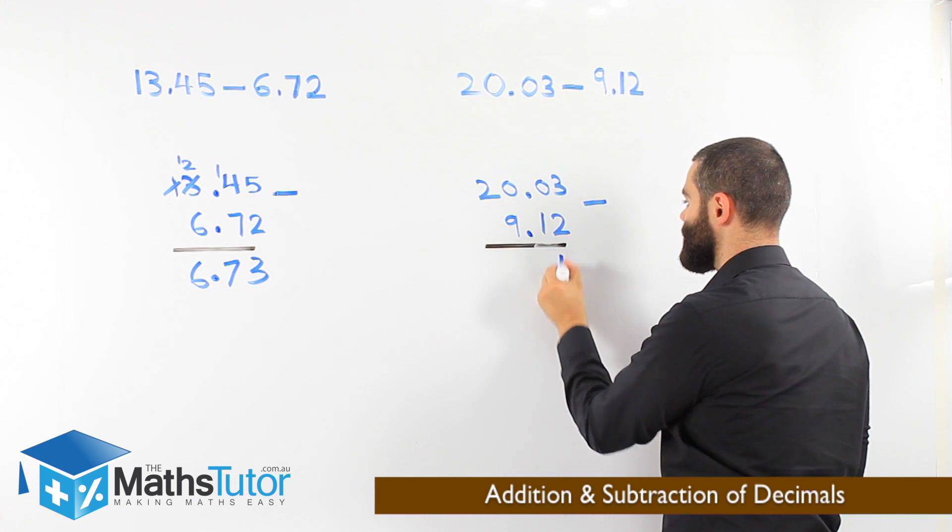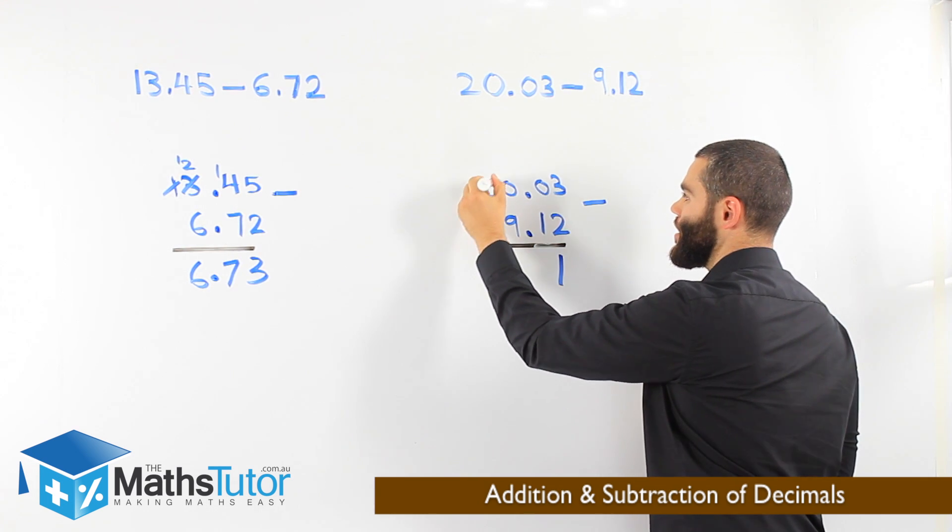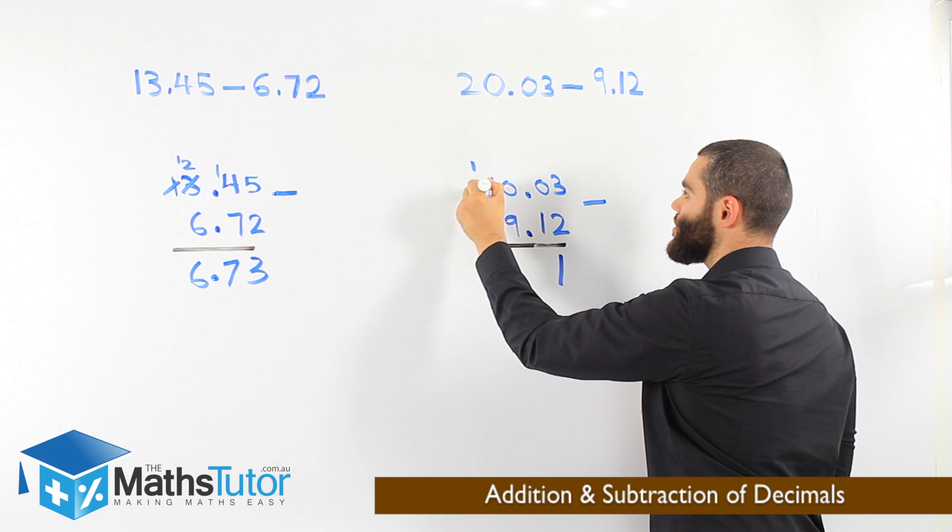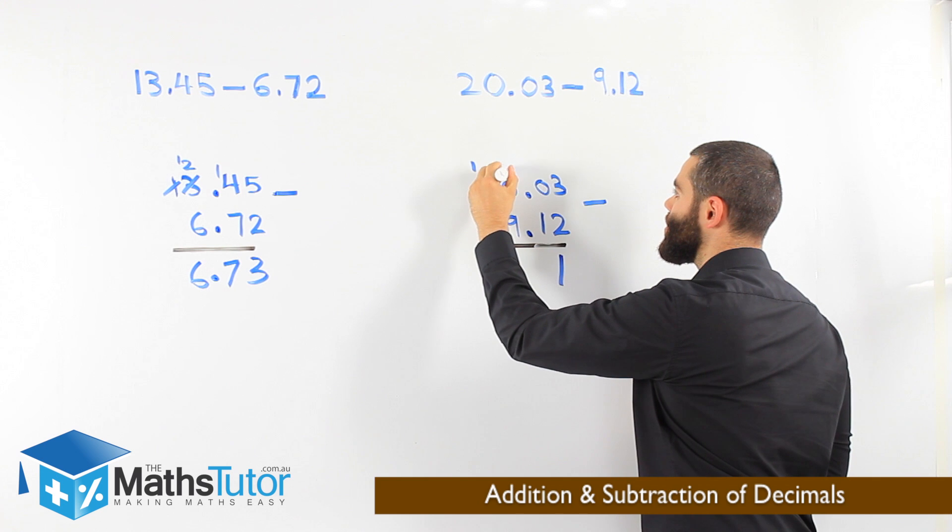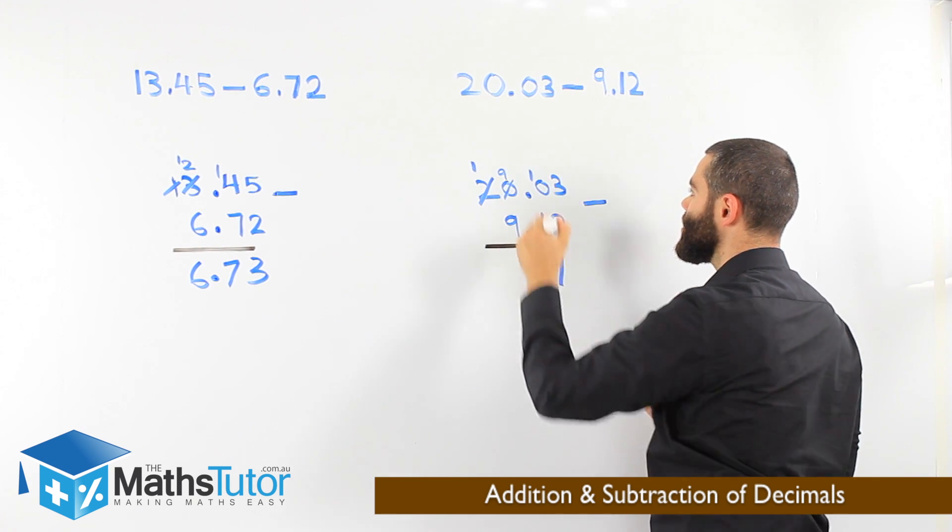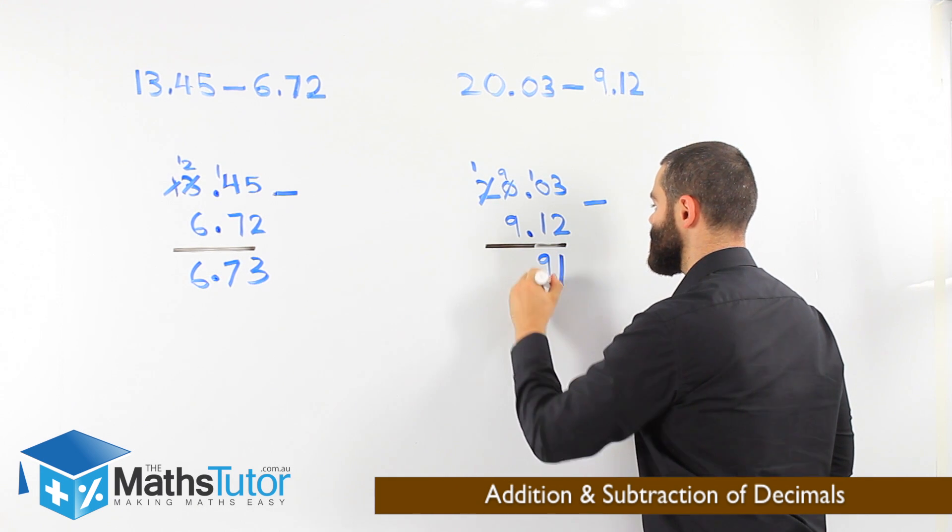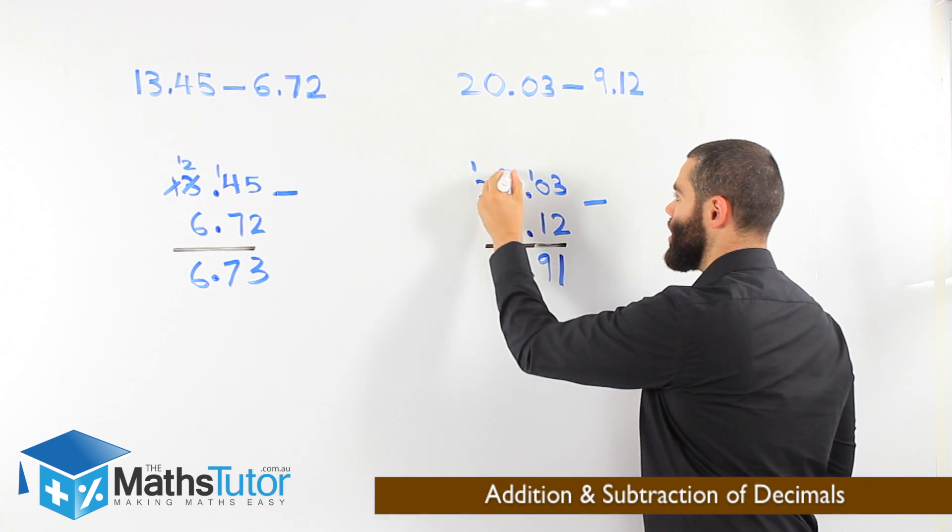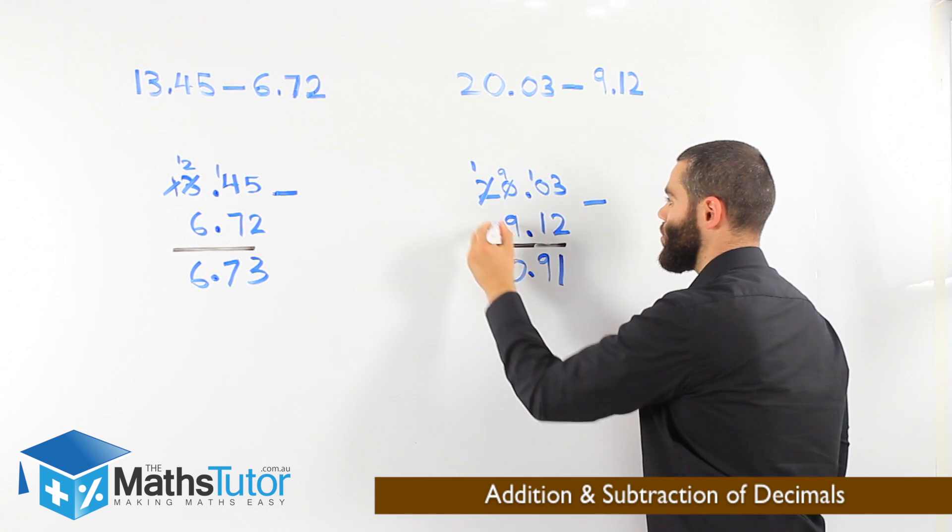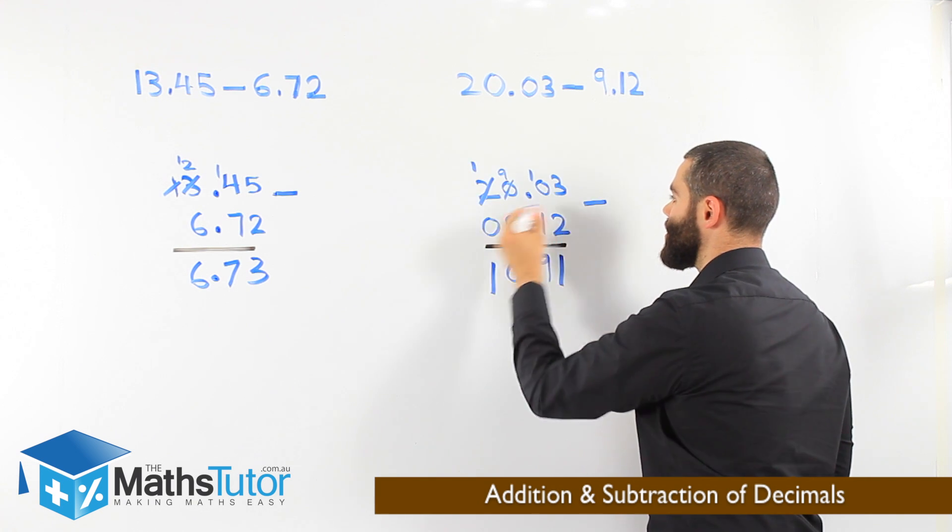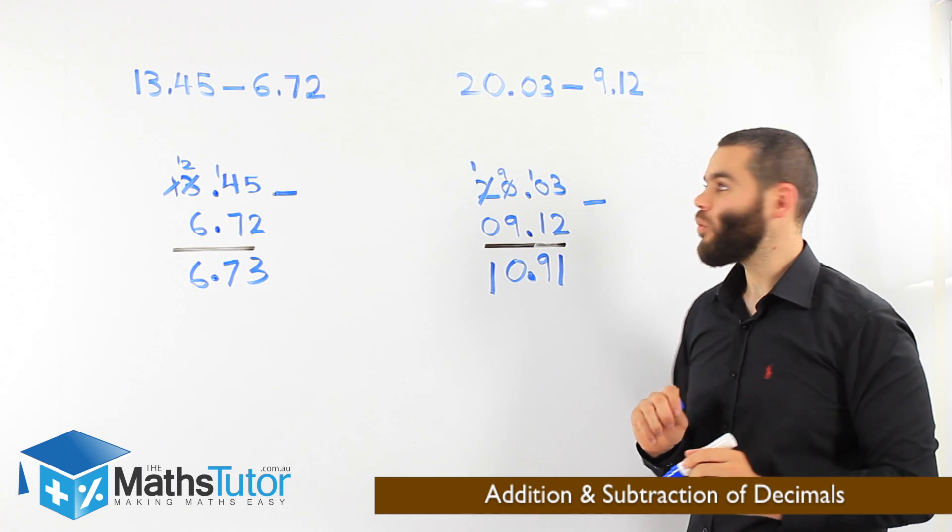So, 3 take away 2 is 1. 0 take away 1 we can't. We borrow. We can't. We borrow. Here, yes we can. 2 becomes a 1. That becomes a 10. When it borrows to this one, it becomes a 9. And 10 take away 1 is 9. 9 take away 9 is 0. And of course, our 1 goes down or you can put a 0 there. 1 take away 0 is 1. So, 10.91.